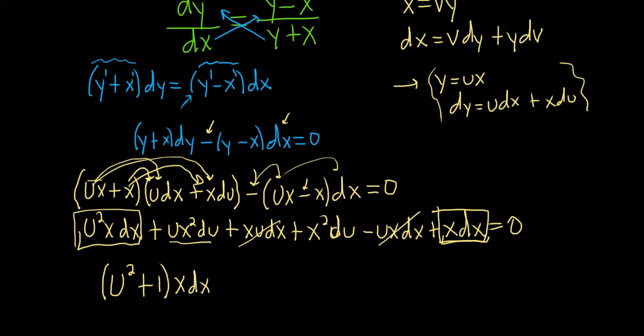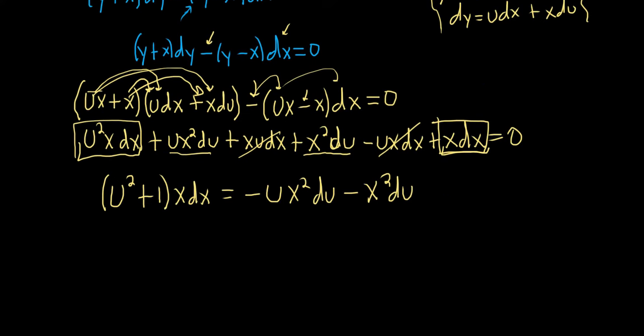And then here, I guess we could do some math here as well. Let's maybe subtract this over to the other side first. So this is minus ux²du minus x²du. We could have combined them, but I figured let's move it over to the right hand side first before we do that. So this is going to be (u²+1)xdx equals, and I guess here we can pull out a negative x². So we'll have negative x² times (u+1)du. Looks okay.